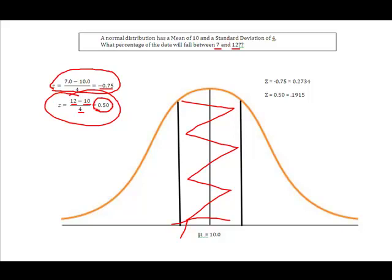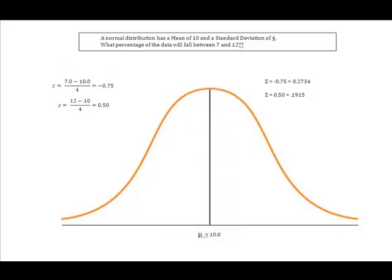I then went to the table in the back of the textbook, and I looked up the two z-scores. And the z-score for the negative 0.75 came out to be 0.2734. The z-score associated with 0.5 came out to be 0.1915.